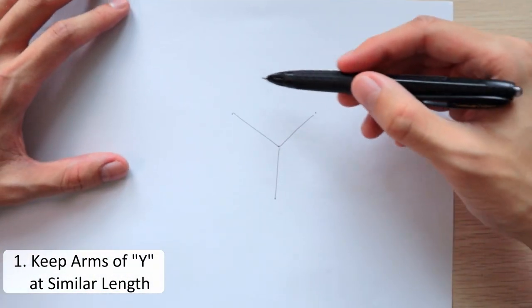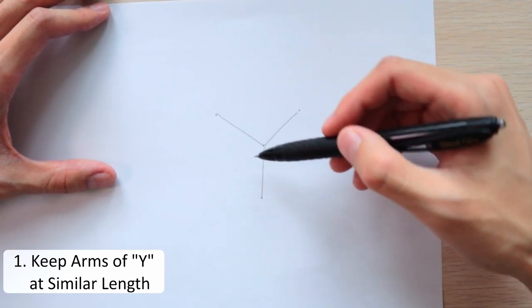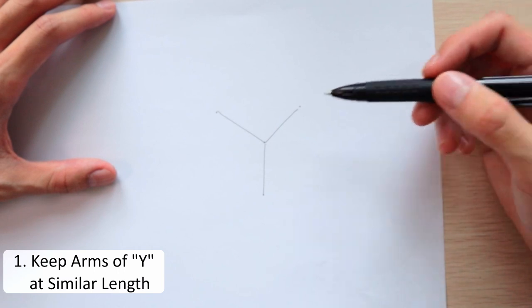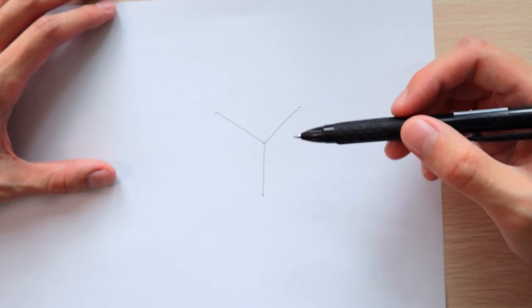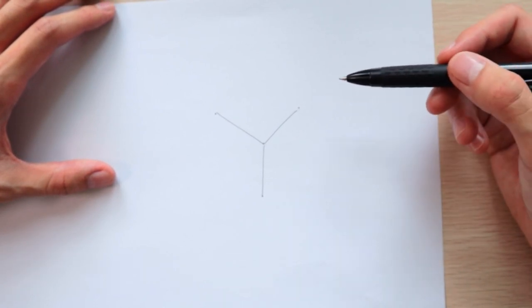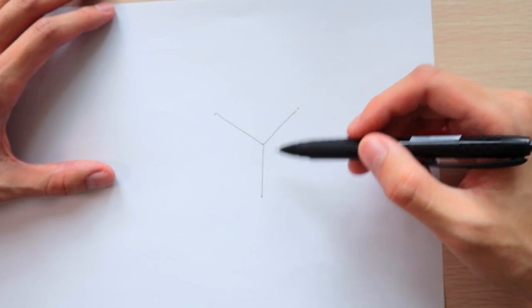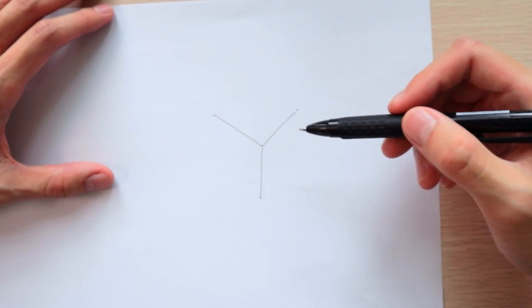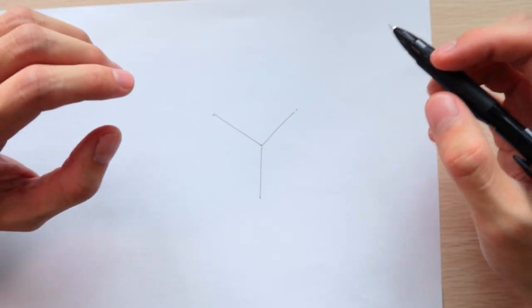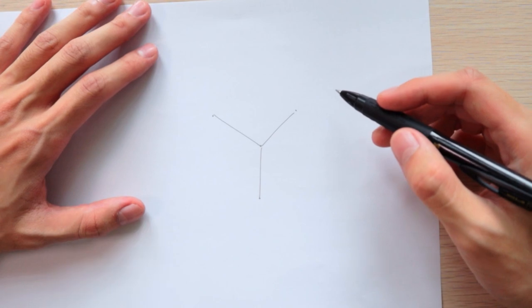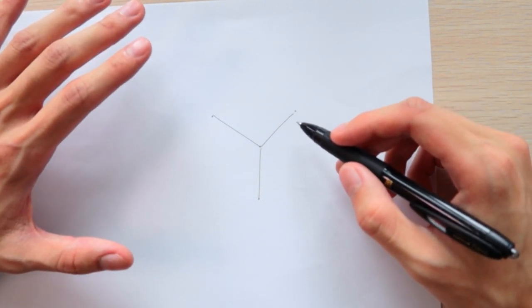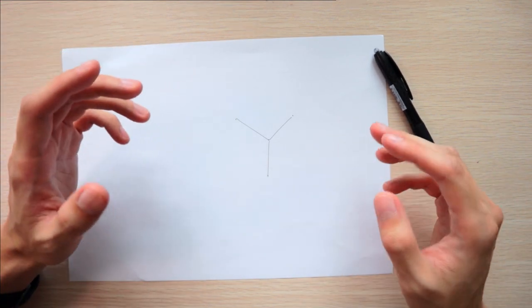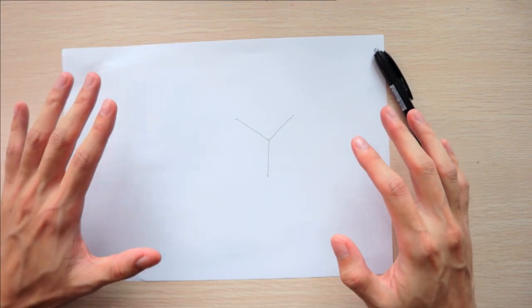So the first cue here is to make sure that the arms of this Y are roughly the same length. Since we're drawing boxes here which are basically cubes that are in perspective, all of their edges should be around the same length. But of course they all won't be exactly the same length because they are in perspective. So you don't want to go too crazy with them so that your box doesn't look too distorted.